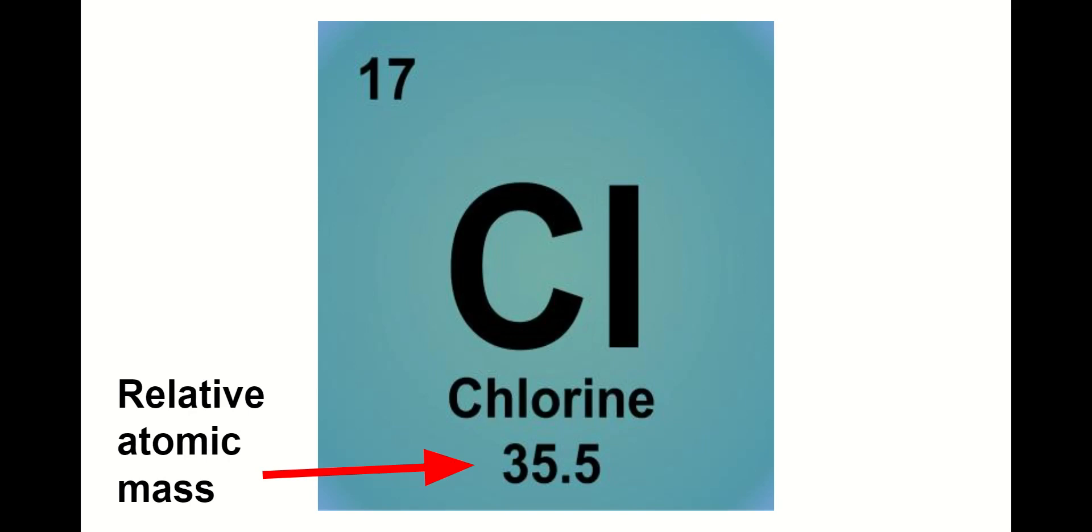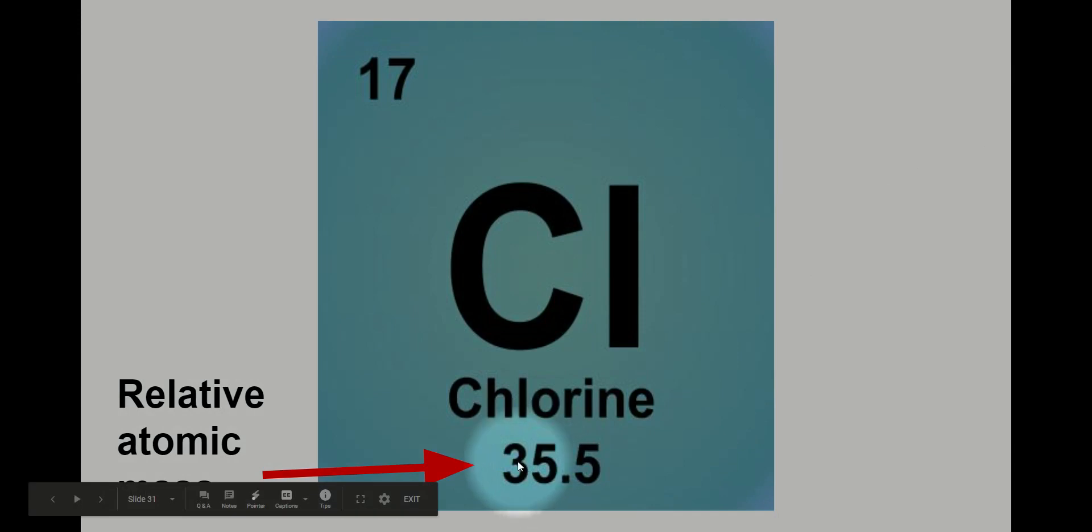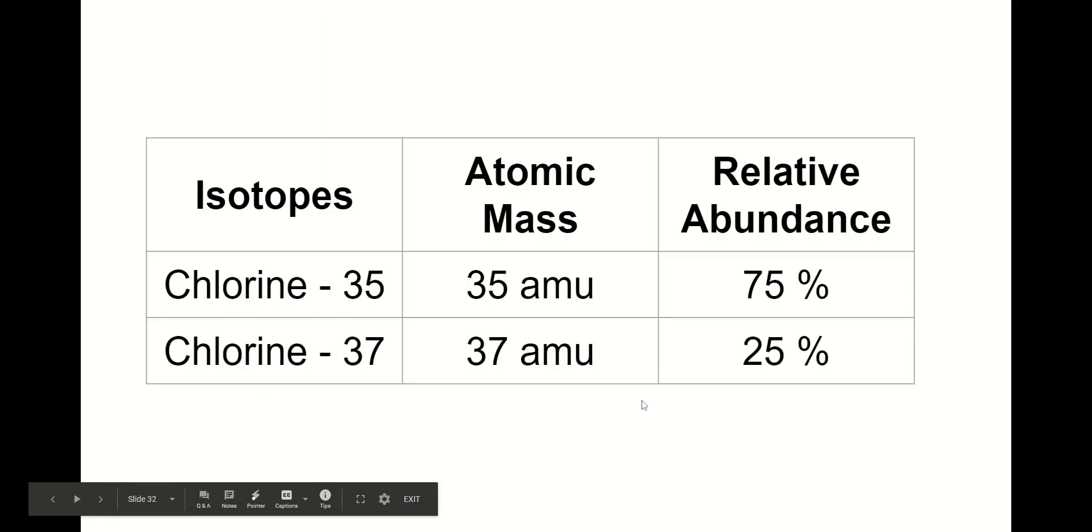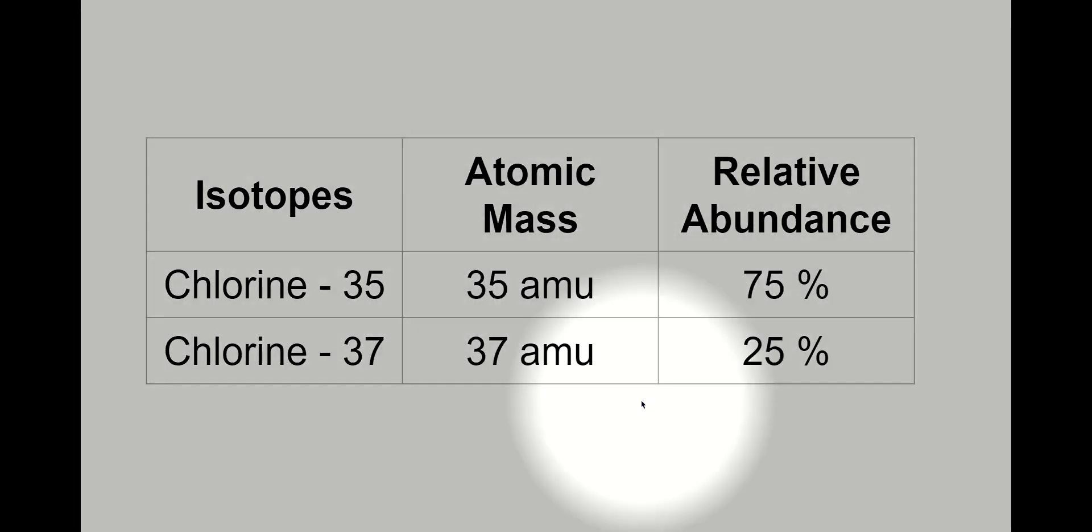And so here we have the mass of 35.5 is our given mass on our periodic table for chlorine. And so chlorine has two isotopes, chlorine 35 and chlorine 37. And you can see their masses here: for chlorine 35 the mass is 35 AMUs and for chlorine 37, 37 AMUs.